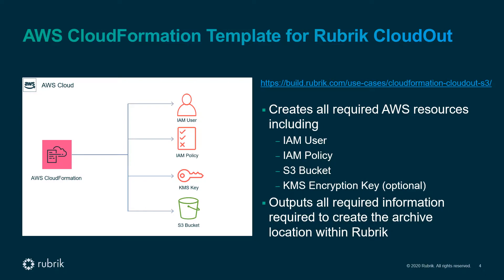Armed with that knowledge, what are we going to demo today? We're going to take a look at the CloudFormation template for Rubrik CloudOut. This is a template you can download and utilize to create and configure all of the AWS resources needed to use CloudOut. This includes automatic creation of an IAM user and associated policies, as well as the S3 bucket itself. Optionally, we can also create a KMS customer key for data encryption within our archival locations. Once we execute the CloudFormation stack, AWS will output all the required information we need to jump back into the Rubrik cluster and configure that S3 bucket as an archival location. So with that, let's jump into the lab.